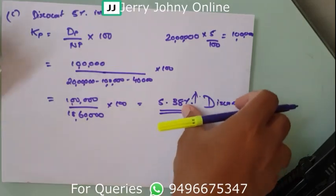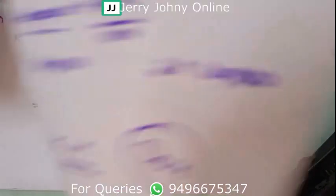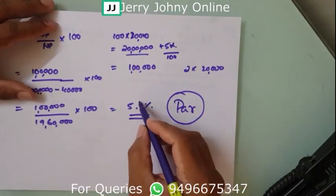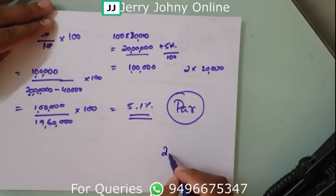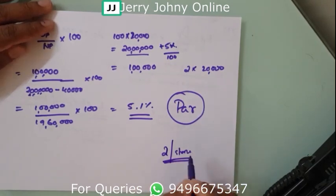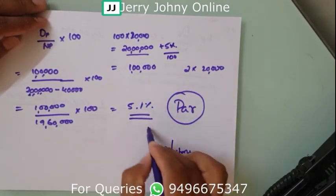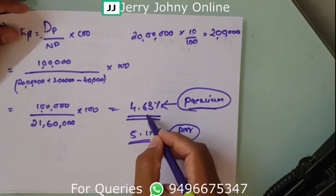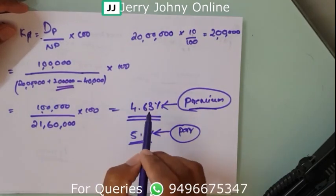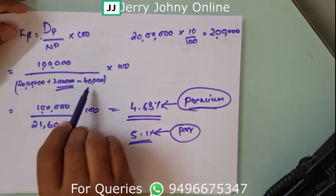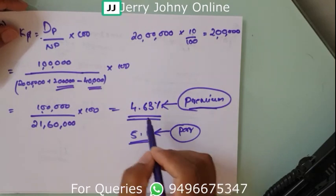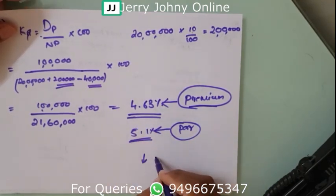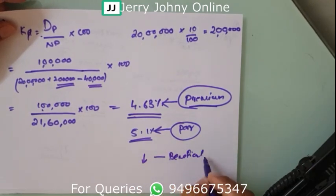Keep this in mind: at par value the 5% preference share costs 5.1% due to the flotation cost of ₹2 per share. At premium it is 4.63% — same dividend but extra funds received. At discount it is 5.38% — you get less money but pay the same dividend, so cost rises. Premium issue is beneficial for the company.